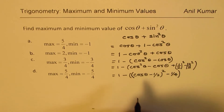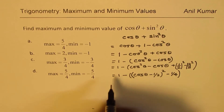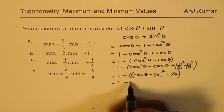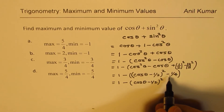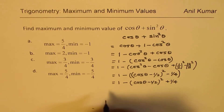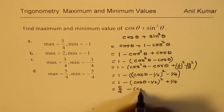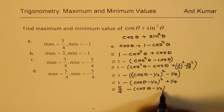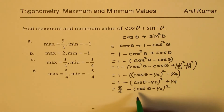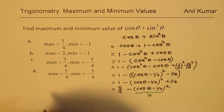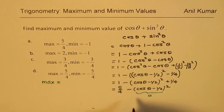Now we have two brackets. Opening the outer bracket, we get 1 minus [(cos theta minus 1/2)² minus 1/4], which simplifies to 5/4 minus (cos theta minus 1/2)². From this expression we can easily find the maximum value. If we subtract 0 from 5/4, we get the maximum value of 5/4, which occurs when cos theta equals 1/2, i.e., when theta equals pi/3.